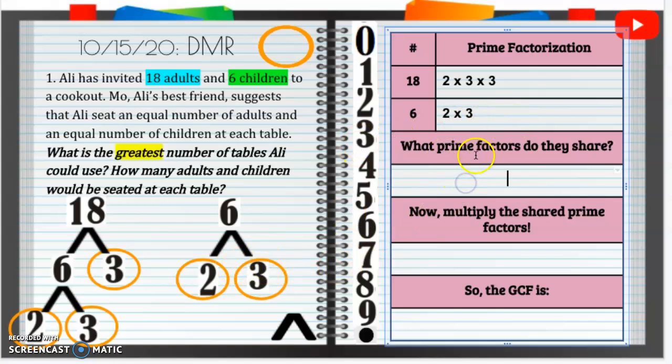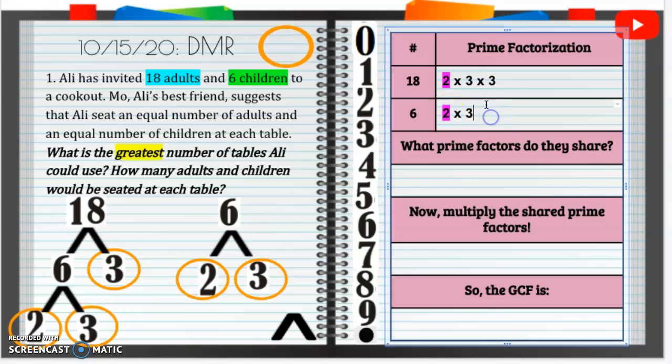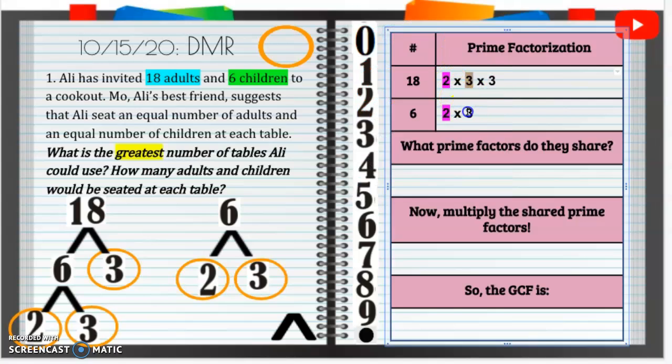Now, we need to figure out what prime factors do they share. So what do they share? Do they share a 2? Actually, yeah, they do. I'll highlight that in pink there. They have a matching pair of socks of 2. What about a 3? Yes, they do. They have a 3 in common. Let's do that in orange. Do they have anything else in common? No, that's all. So they share a 2 and they share a 3.